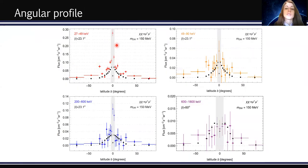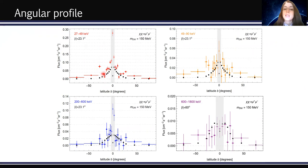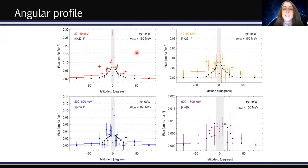I also show the angular profile in the other four energy bands considered in our analysis. The color points are the data, and the black points refer to dark matter particles with a mass of 150 MeV, muon channel, and an annihilation cross-section at the thermal relic bound.